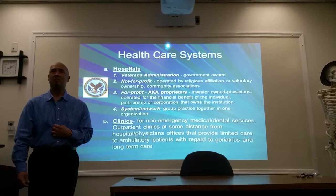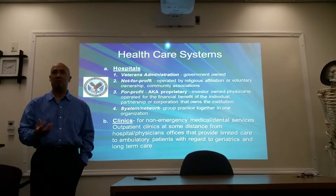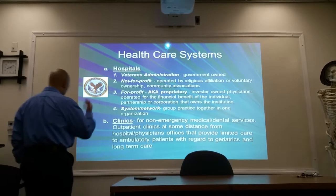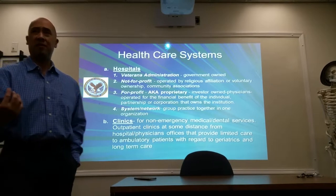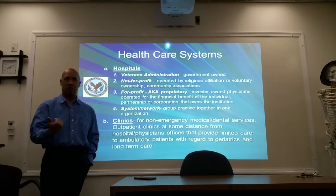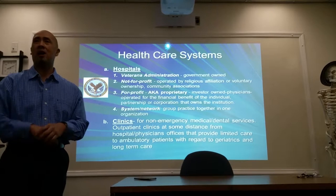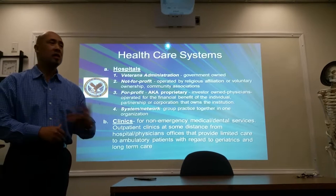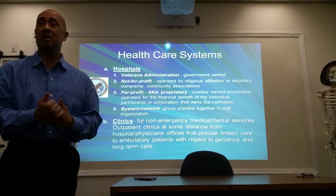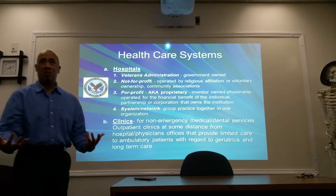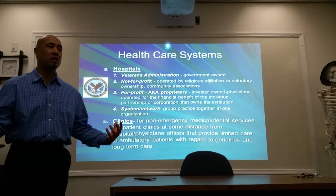Are you familiar with Kaiser? It's one of the bigger organizations out there — you've got Kaiser, Humana, and Tenet. These are all different systems and networks. So you have your hospitals and your clinics. Clinics are a smaller outfit; they don't have all the services a hospital would offer. They generally exist for non-emergent procedures — you walk in and walk out. They exist outside or separate from a facility, usually located near a doctor's office.